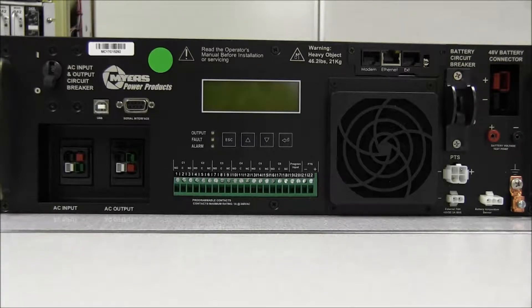So here we have the Meyers BBS backup system. It has several different contacts. The first one that we're going to talk about is C3. The C3 contact is a 40% low battery contact.